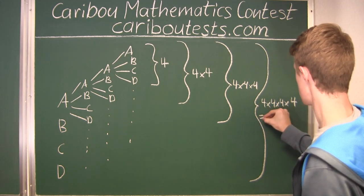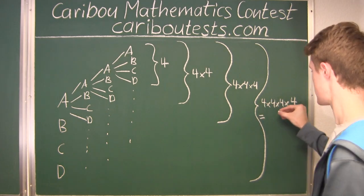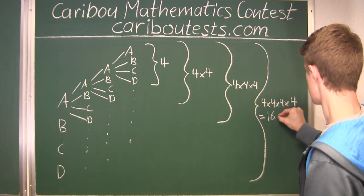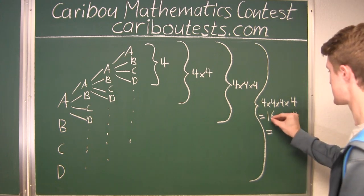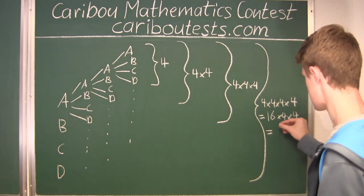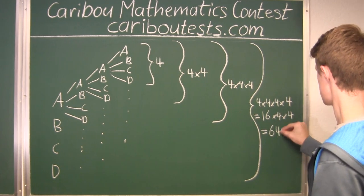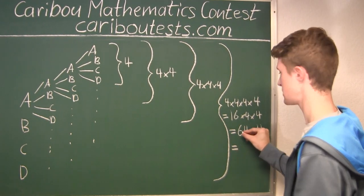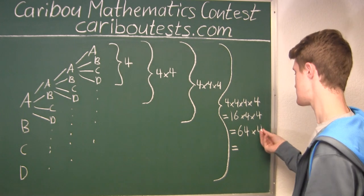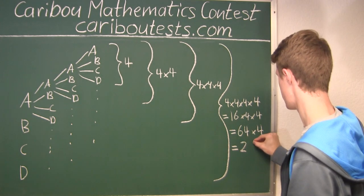Well, this is equal to four times four is equal to sixteen times four times four. Then, sixteen times four is equal to sixty-four, still times four. And sixty-four times four is equal to two hundred and fifty-six.